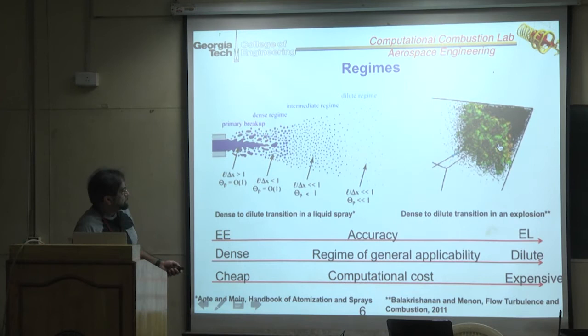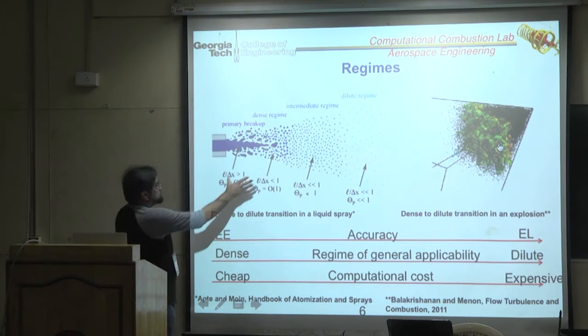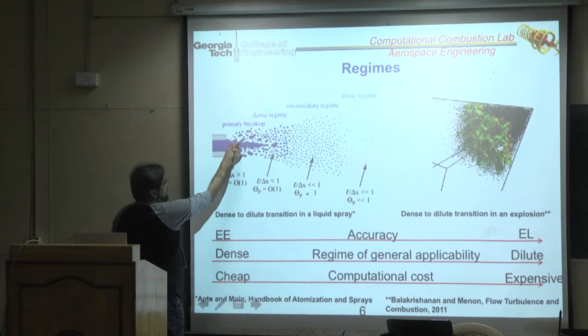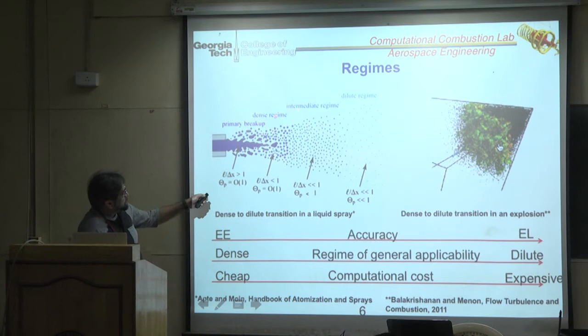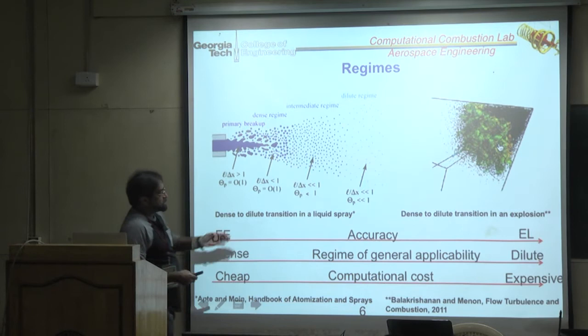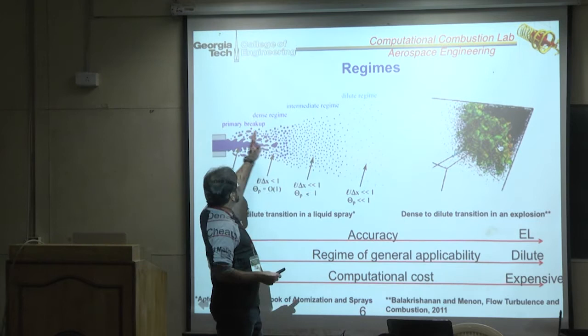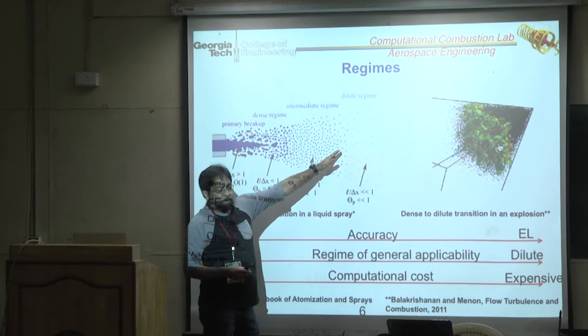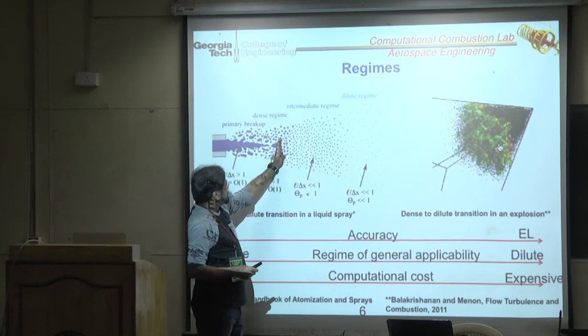Assuming the dense region has collapsed to a small injection area, we want to model the spreading from dense to dilute. Pure Eulerian-Lagrangian can only start in the dilute regime and applies a breakup model for the whole upstream region. We're now trying to add a dense correction upstream and transition automatically from dense to dilute.